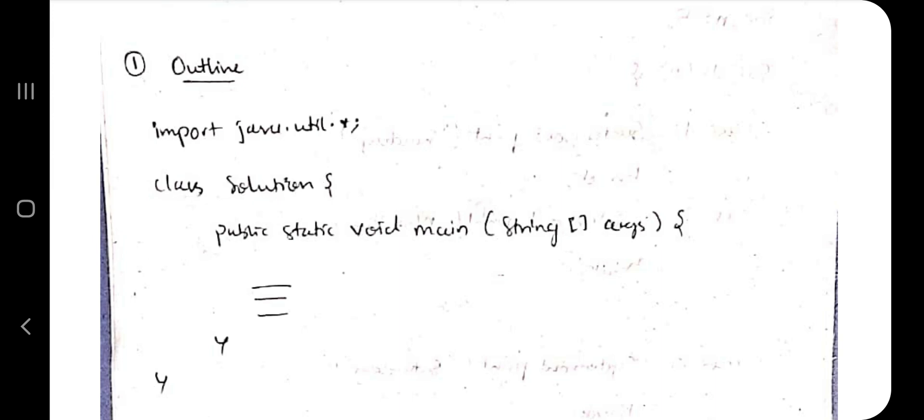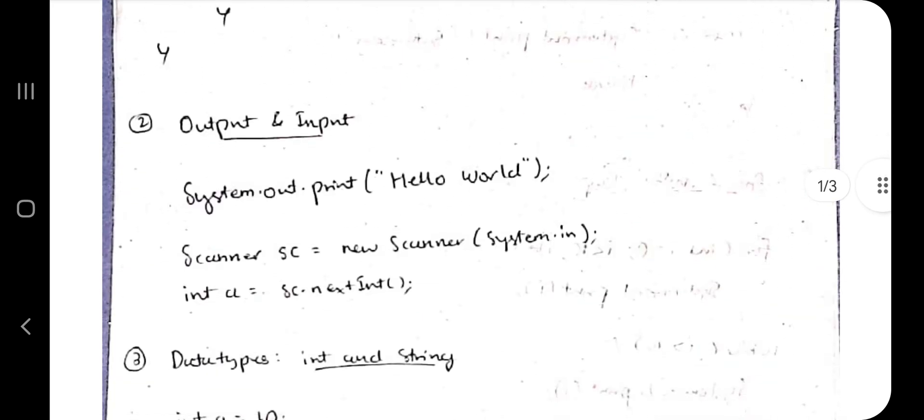After that, the function starts from public static void main. Just for now, just remember you have to write this, and whatever code we'll be writing in the upcoming topics will be writing inside this. So this is the first thing, which is outline.